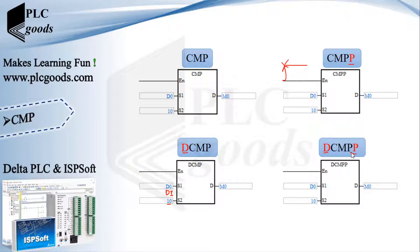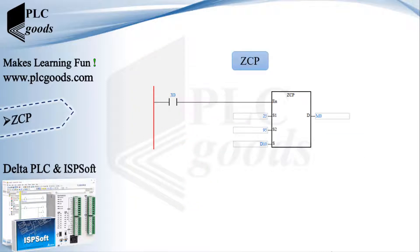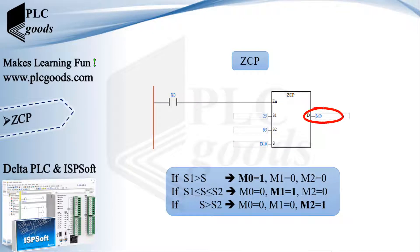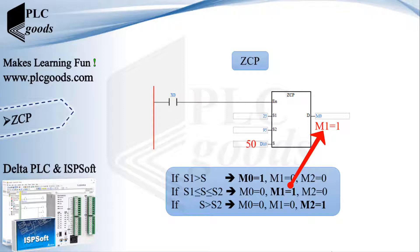Pay attention to these letters — this rule of using letters P and D is usually true for other instructions. The next instruction is ZCP, zone compare. It gets three numbers; the first and second inputs determine a lower and upper bound. This instruction checks the last input against these statements and then turns on a bit address. It uses three bit addresses at its output. For example, if the last input is equal to 50, the second statement will be true, so PLC will activate M1 and turn off M0 and M2. Like the previous instruction, there are three similar instructions using letters P and D.